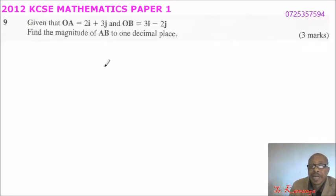This is question number 9, 2012 KCSE Mathematics Paper 1. We are told, given that OA equals 2i plus 3j, and OB equals 3i minus 2j, find the magnitude of AB to one decimal place.